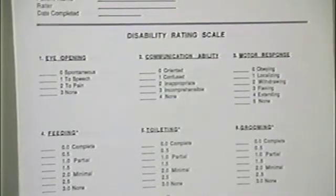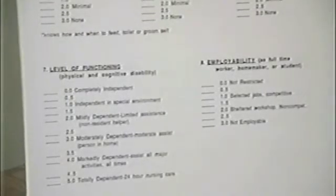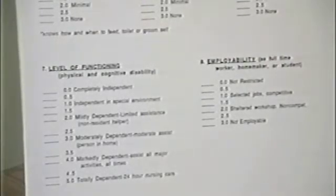Scale properties are that it has eight items. The first three are actually the Glasgow Coma Scale, rated slightly differently but easily transformed. Those are eye opening, communication ability, and motor response. The second three items are cognitive ability for feeding, toileting, and grooming — activities of daily living. The last two items are level of functioning, or the ability to live independently in the community, and employability. We'll be going into more detail on each of these items.